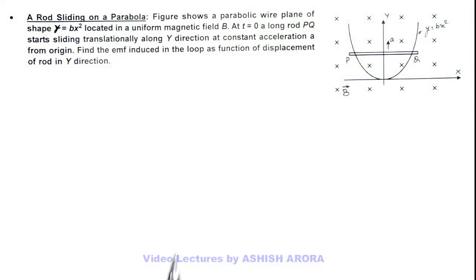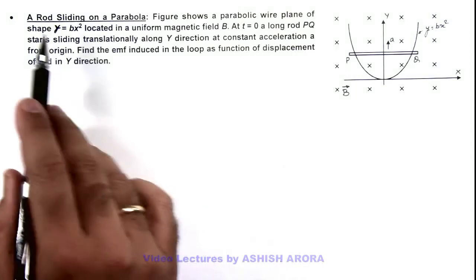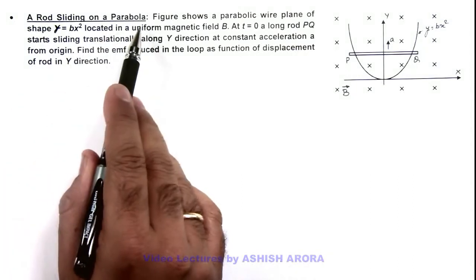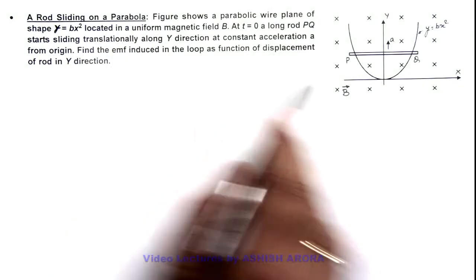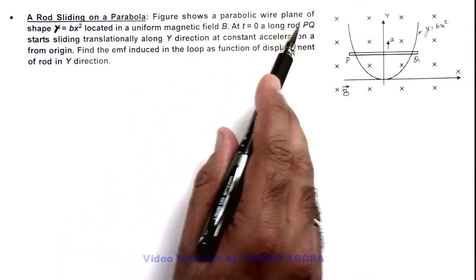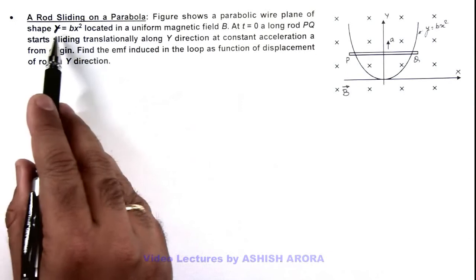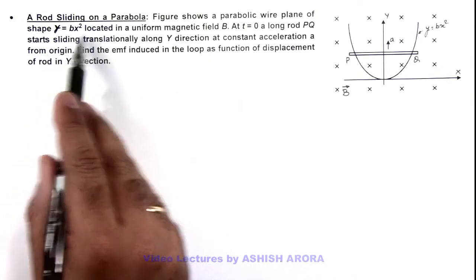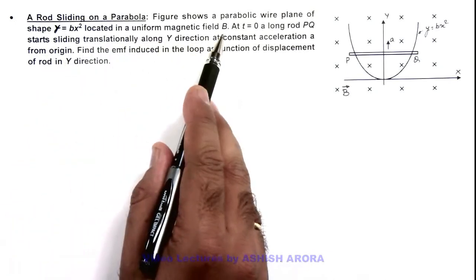In this illustration we'll see a rod which is sliding on a parabolic shaped wire. The figure shows a parabolic wire in the plane of shape y equals b x square, located in a uniform magnetic field B.